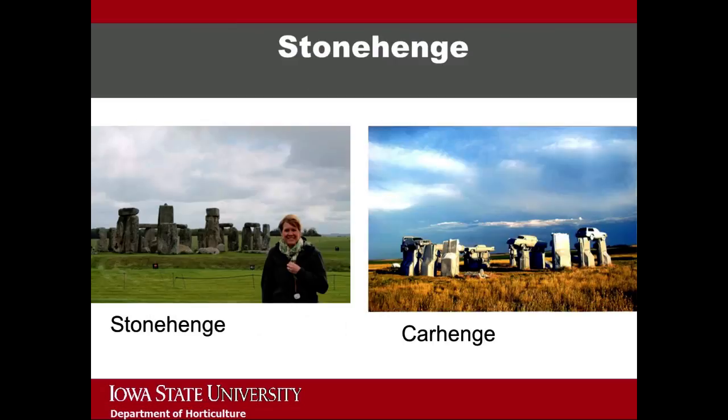The stone formations at Stonehenge are just one example of a remnant from an ancient landscape. The formation reflects much of the nature, climate, landform, culture, and spirituality of that time. If you aren't able to travel to Wiltshire, England — image on the left — you should consider a trip to Alliance, Nebraska to take in Carhenge, a midwestern version of Stonehenge — image on the right. I've not seen it yet, but it is on my bucket list.